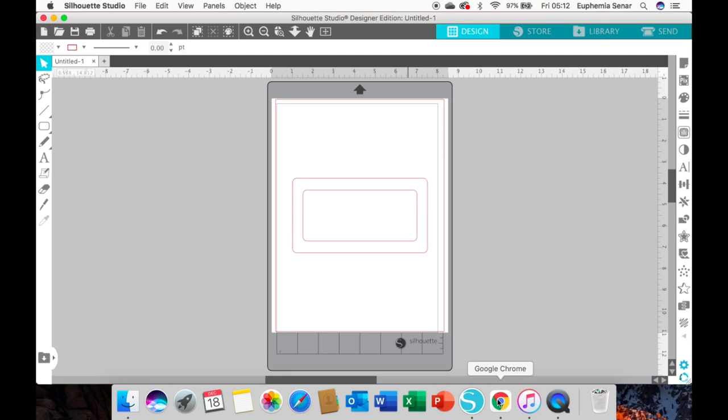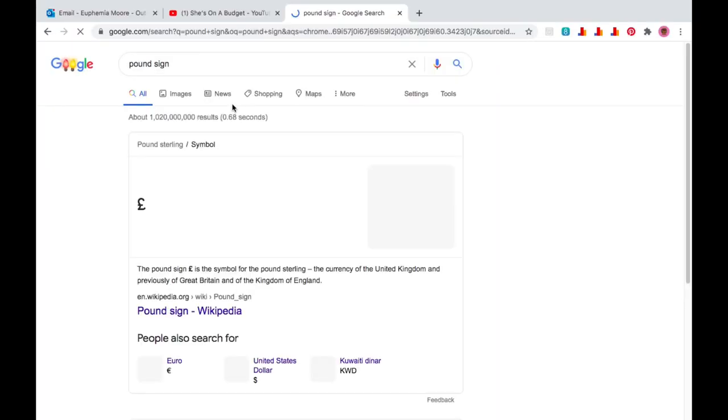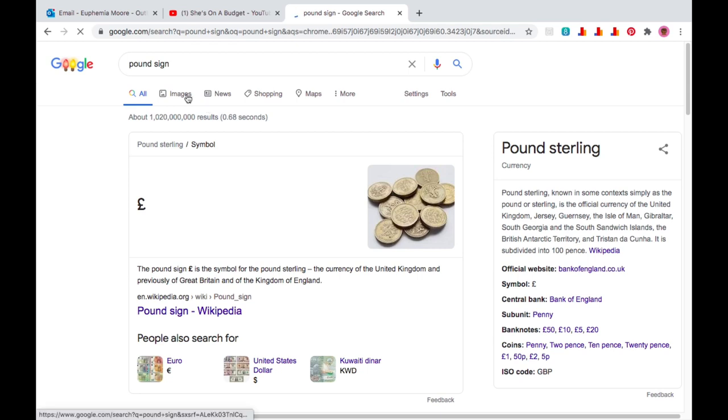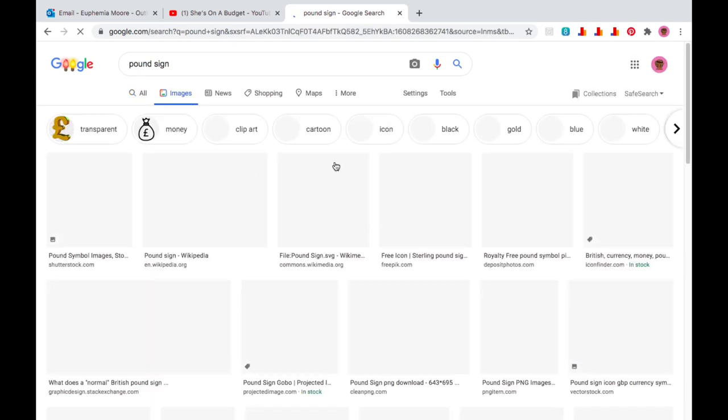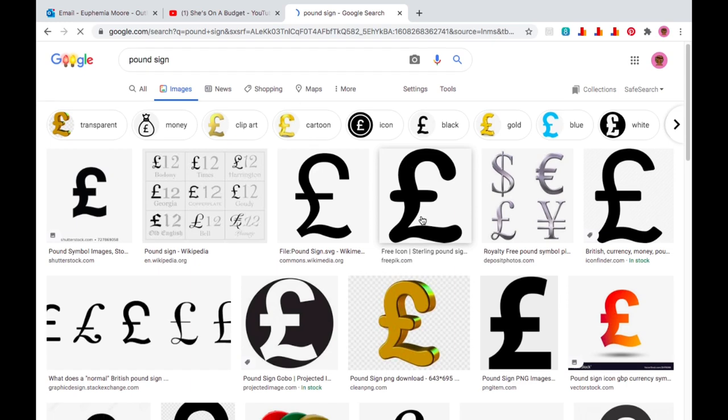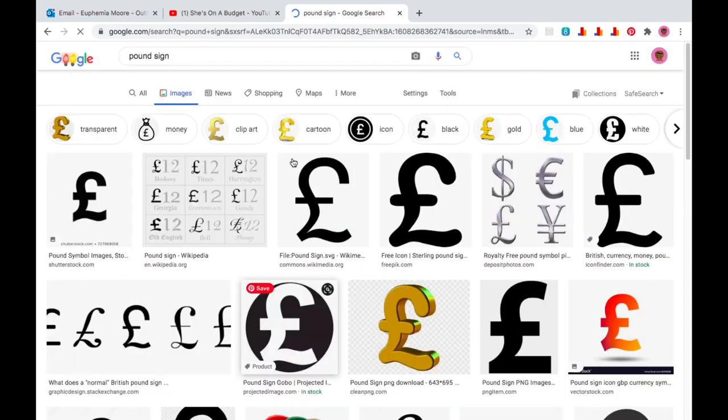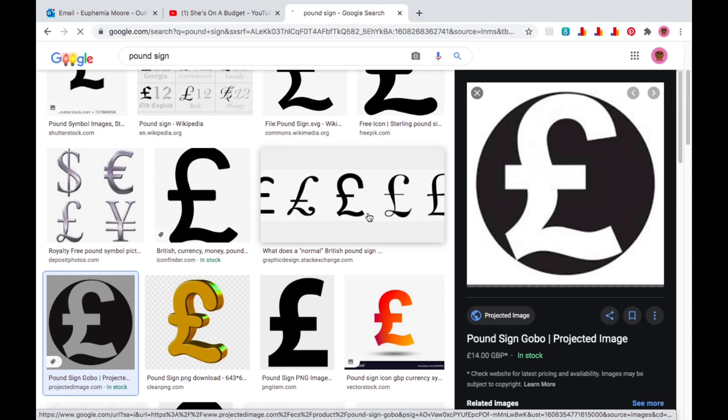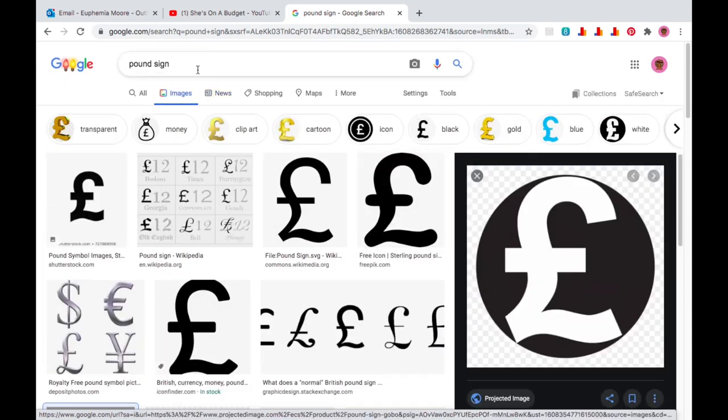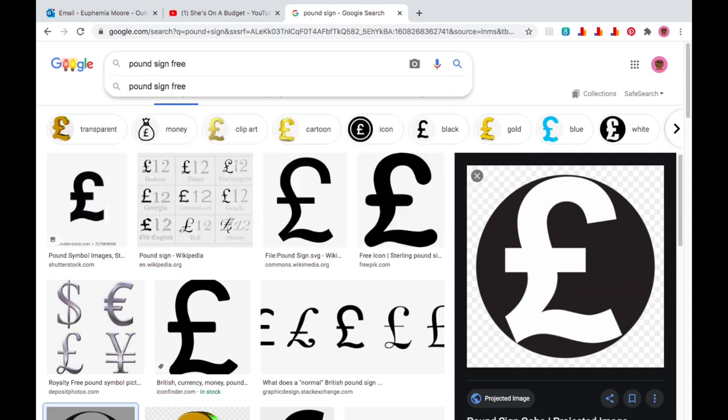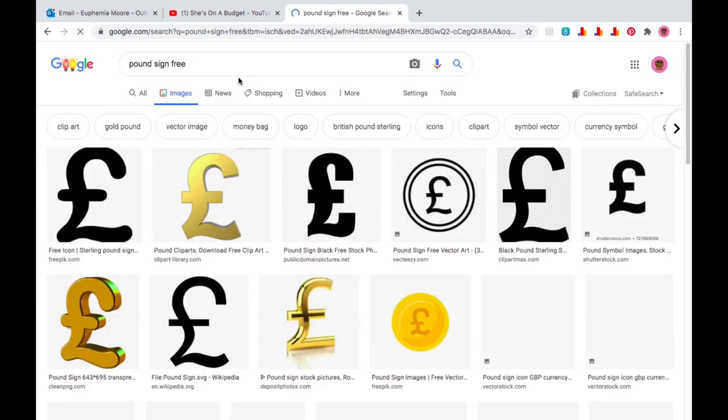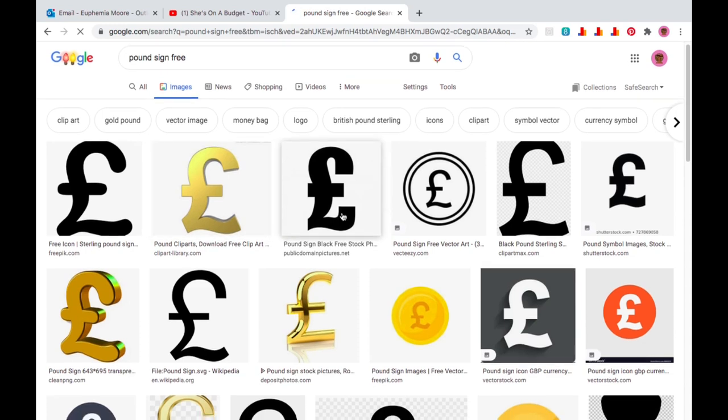I've decided to go for a pound sign in the middle of my envelope, so I've just gone on to Google to search for a pound sign symbol. I'm hoping to find some kind of clip art that I can copy and transfer to my Silhouette library. You have to be really careful though, because if you're looking to sell your envelopes, you need to make sure that you find free art. You can't just take any symbol from the internet and sell it as your own. I've gone back into Google now and changed my search to free, so that I can make sure I'm not taking anyone else's design and I'm free to use it and sell it if I choose to.